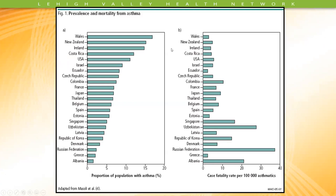This slide demonstrates the prevalence of asthma and mortality throughout the world — the proportion of population with asthma on the left, and fatalities per 100,000 asthmatics on the right. Wales has a large number of individuals with asthma but relatively low death rates. In contrast, the Russian Federation has fewer documented asthma cases, but those that are documented have very high mortality — almost 40 per 100,000 — much higher than many other regions.